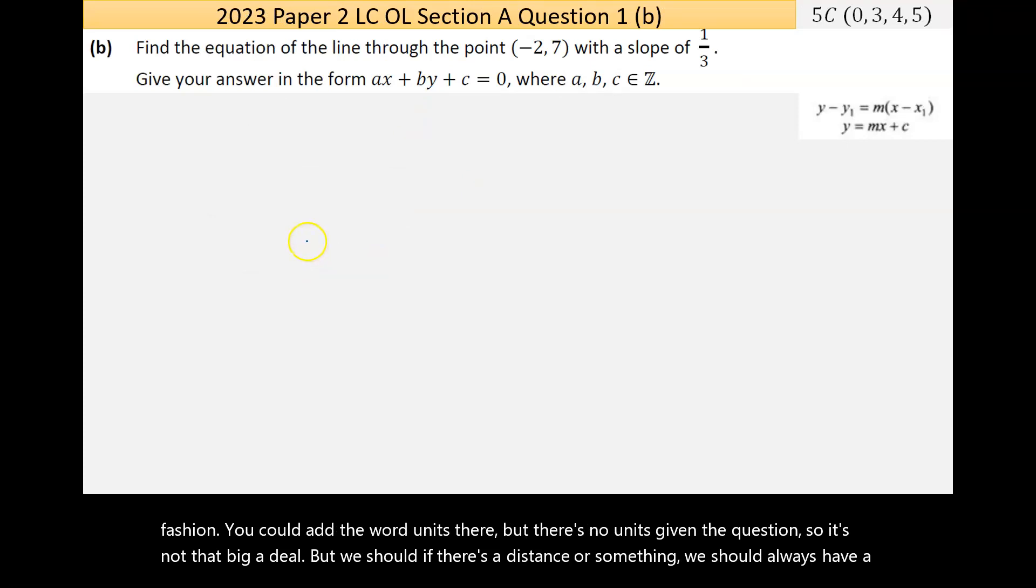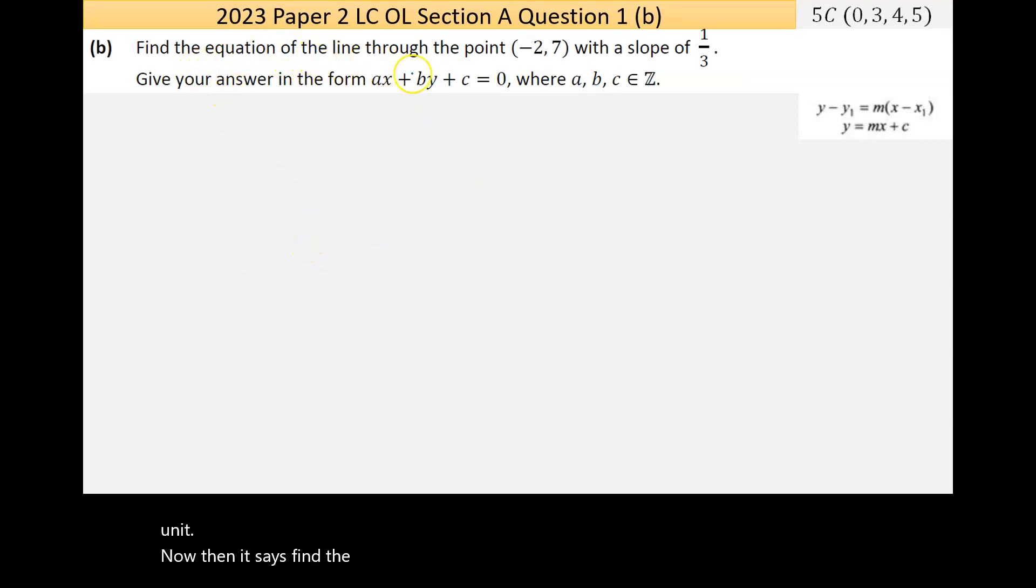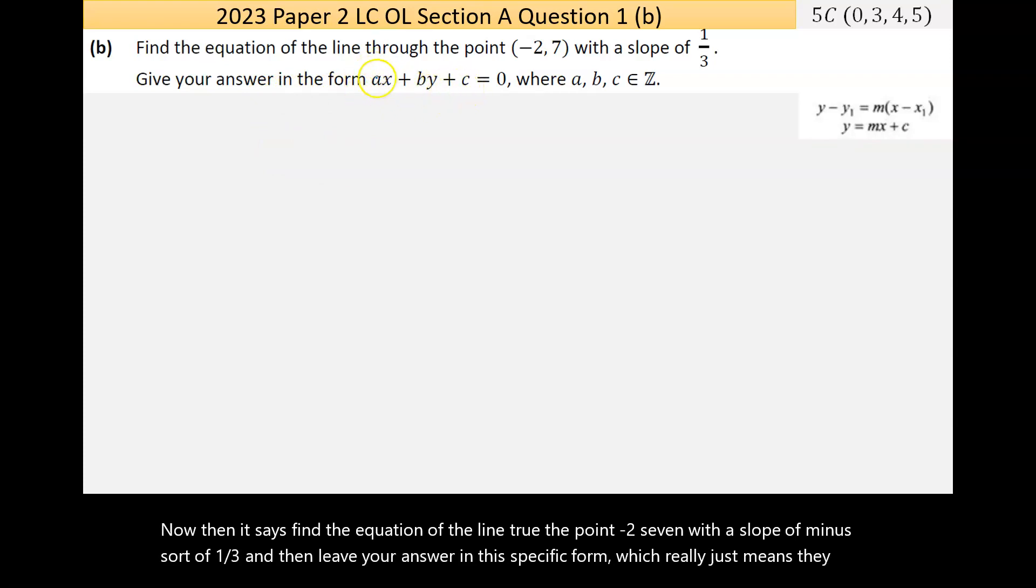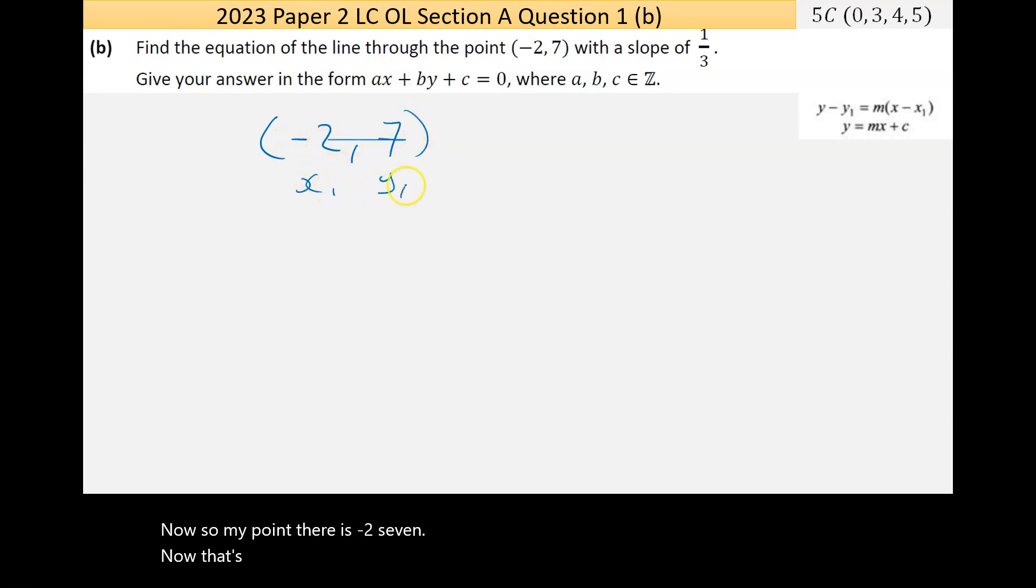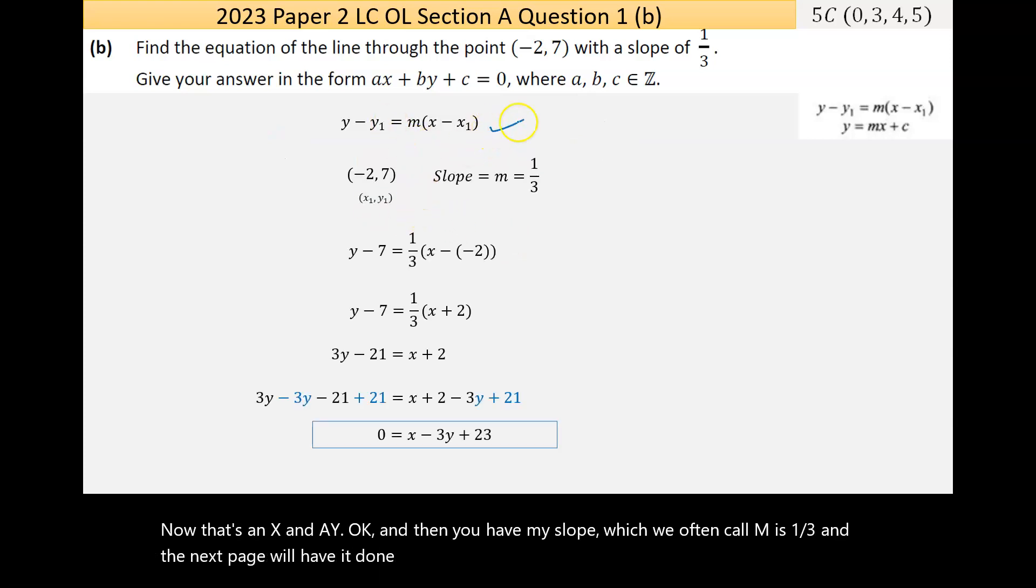It says find the equation of the line through the point (-2, 7) with a slope of -1/3, and leave your answer in this specific form, which really just means they want everything on one side with a being positive. My point there is (-2, 7) - that's an x and a y. Then you have my slope, which we often call m, is -1/3.